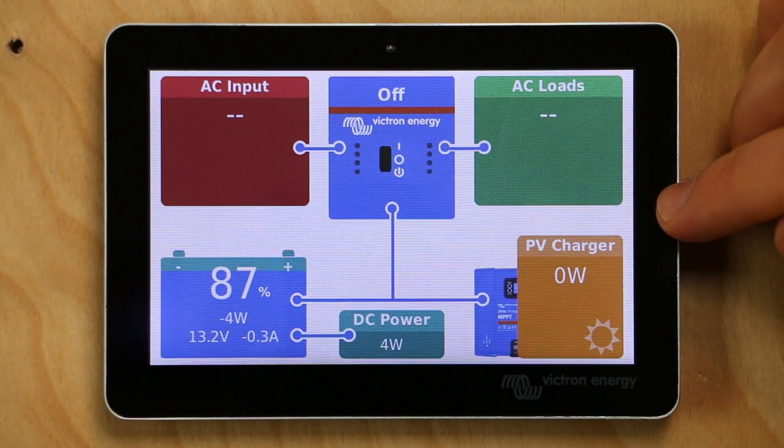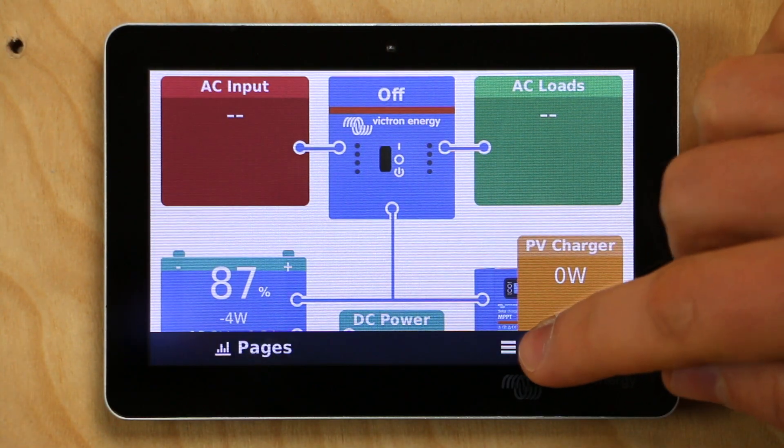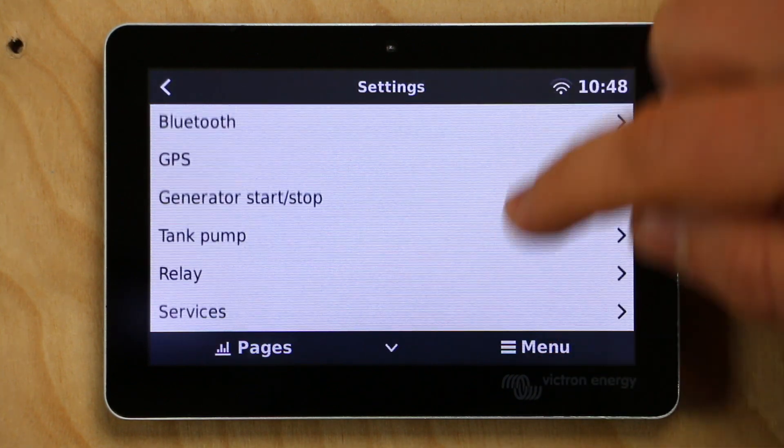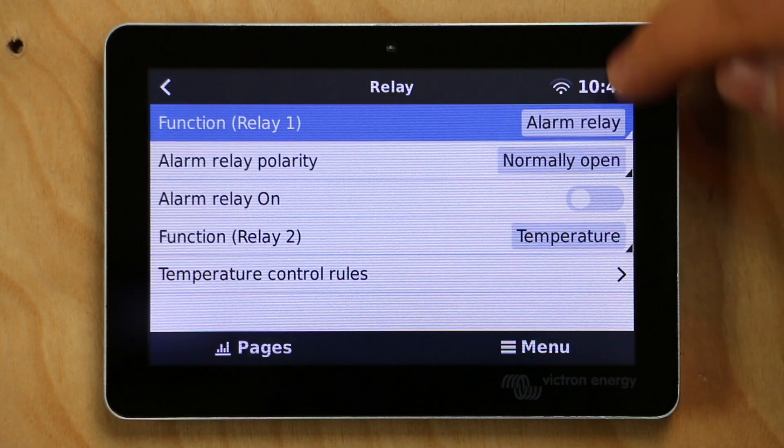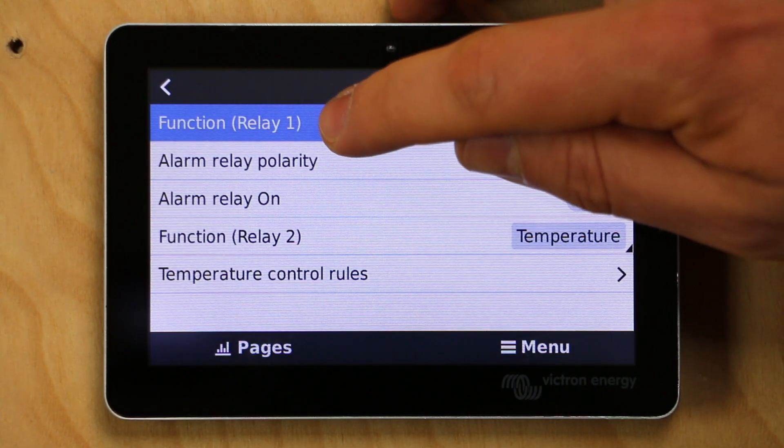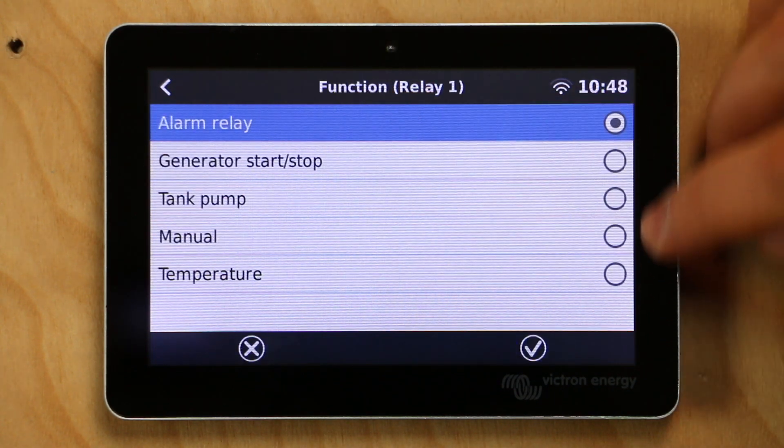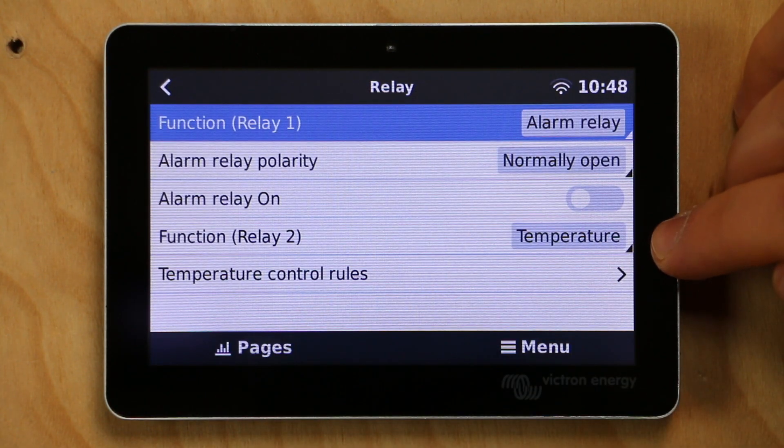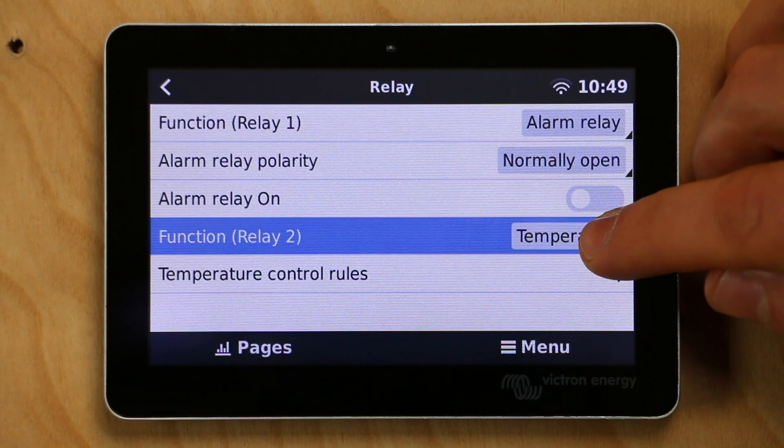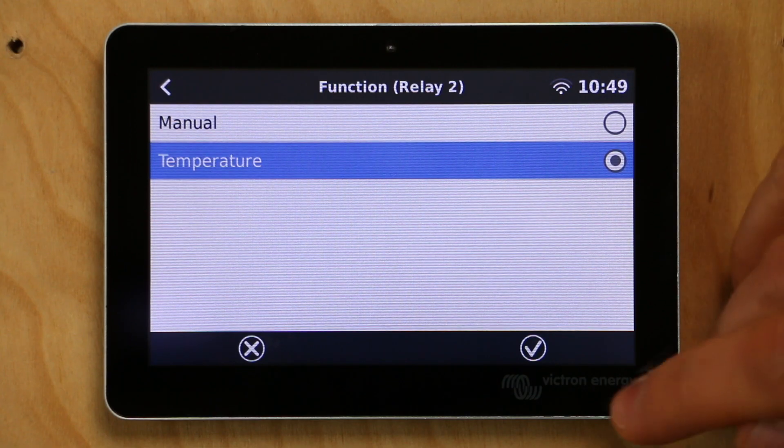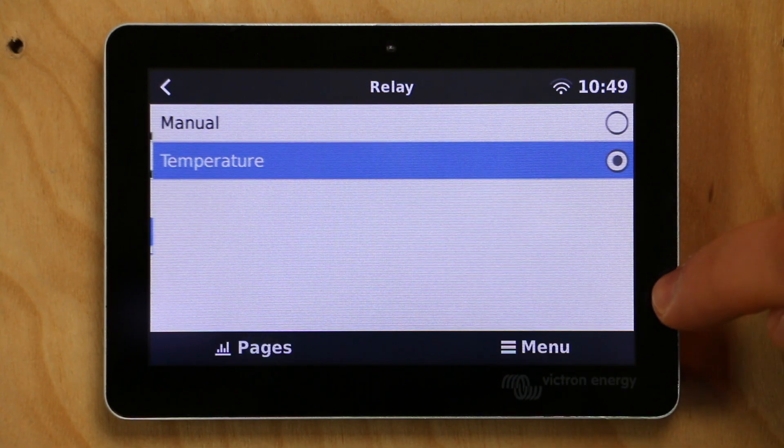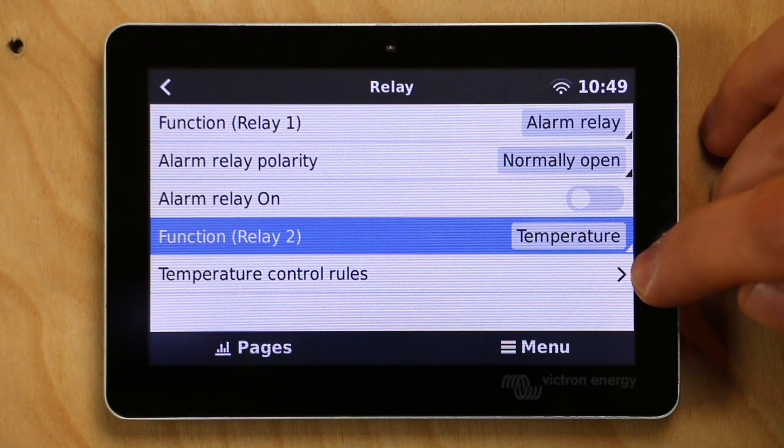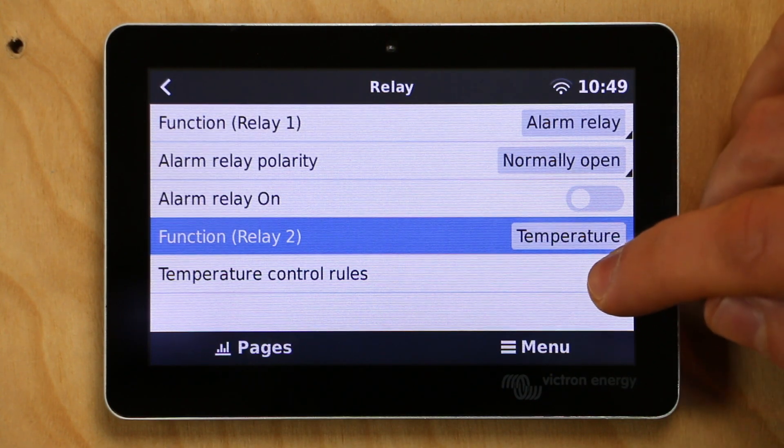To have a Ruuvi tag set off a relay, what we want to do is click on the main screen and go to menu. Scroll down to settings and then scroll almost to the bottom where it says relay. Click on relay. You can see there are parameters for relay one and relay two. Now relay one can be controlled by quite a few things. We're going to go ahead and leave that open and go back and we're going to deal with relay two. So relay two can only be set off by temperature or it can also be set off manually, but we're going to select temperature as the parameter and click the check mark.